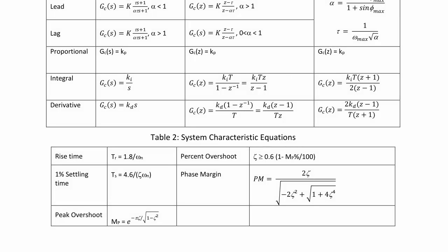Here we have table 2, which has some discrete time system characteristic equations, including rise time, 1.8 over omega n, 1% settling time, 4.6 over zeta omega n, peak overshoot, e to the negative pi zeta over the square root of 1 minus zeta squared,